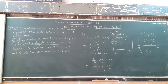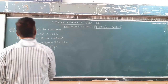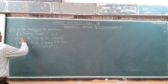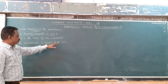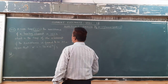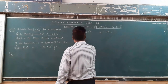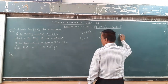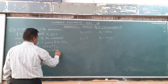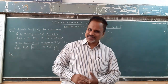Now we go for question number 3.5. This question says that at room temperature 27 degrees Celsius, the resistance of a heating element is 100 ohm. What is the temperature of the heating element if the resistance is found to be 117 ohm? They have given the value of alpha as 1.7 × 10⁻⁴ per degree Celsius. This numerical is based on the temperature coefficient of resistance.